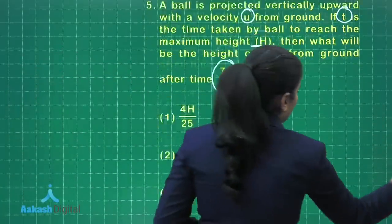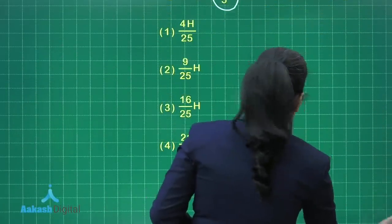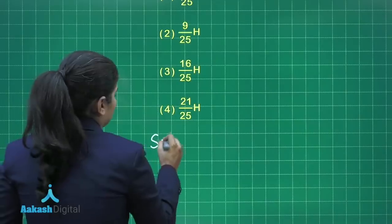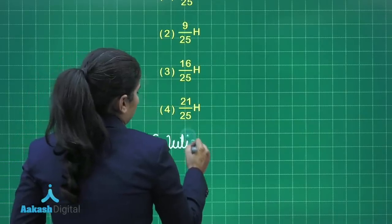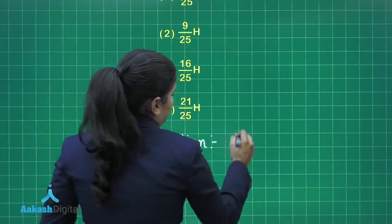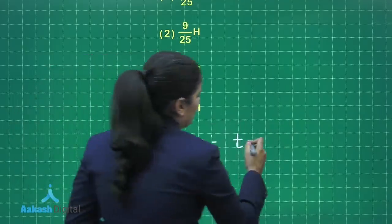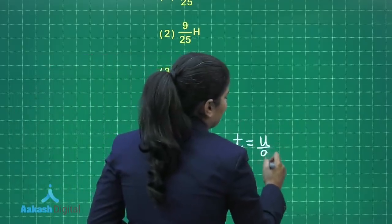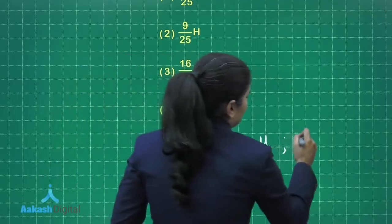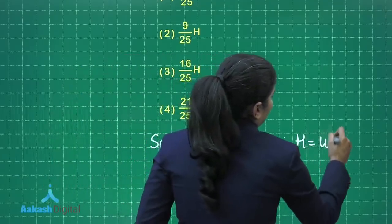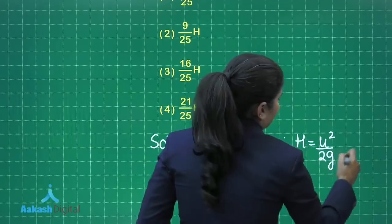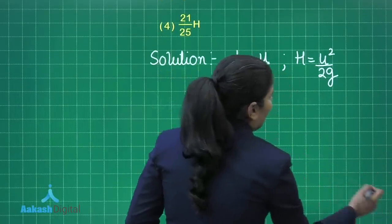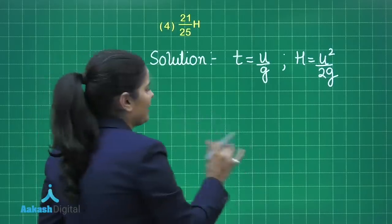If we try to solve this question, I can simply write this t which is the time that is taken by the ball to reach the maximum height. The maximum height will be given by U by g, and we know the maximum height is given by U square by 2g. We need to find out the height at time 7t by 5.